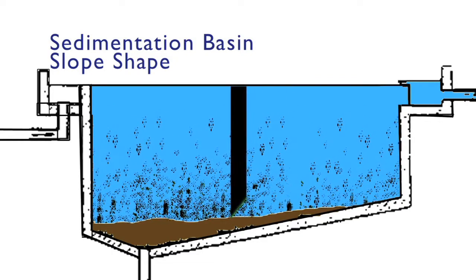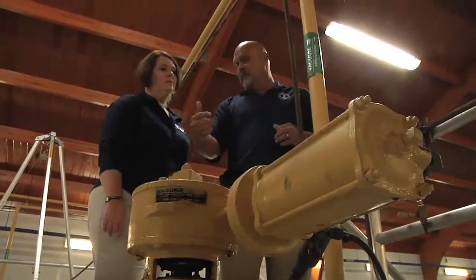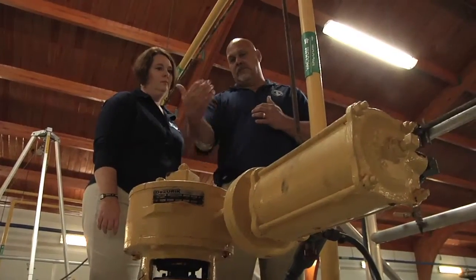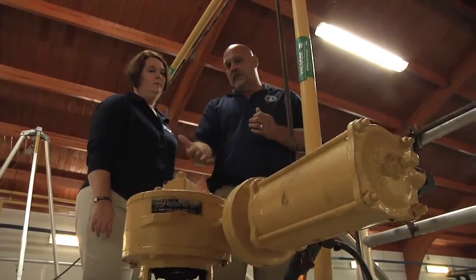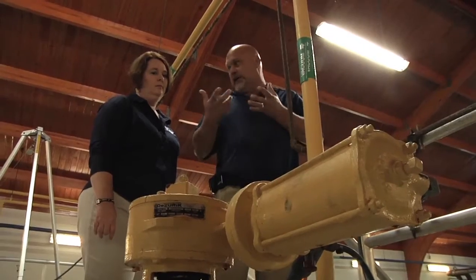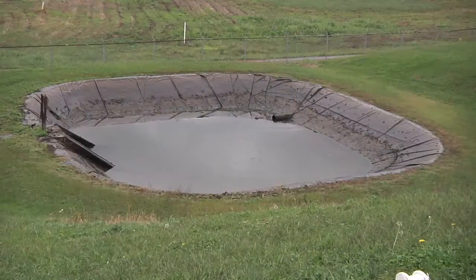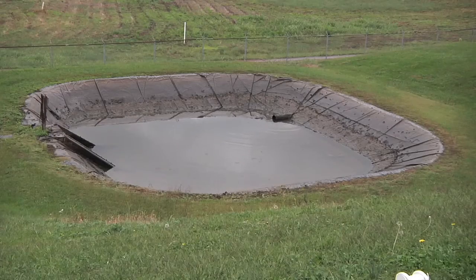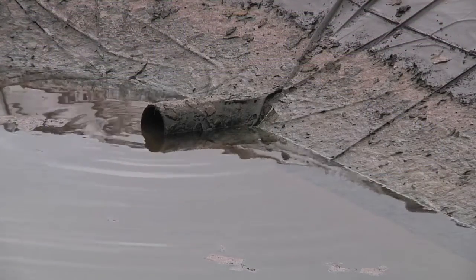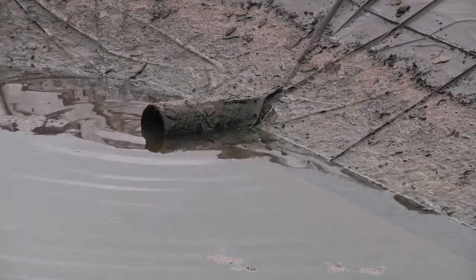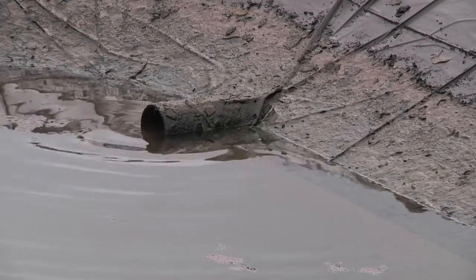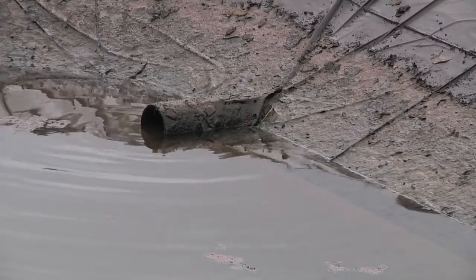The sediment is then pumped out into a sludge basin, or if the water treatment plant is connected to a city sewer system, it's pumped into the sewer system directly. Some plants without automated sediment collection must periodically drain the sedimentation basin and manually clean it out. Even some automated plants should be drained and cleaned occasionally.